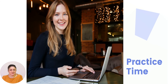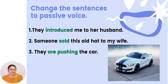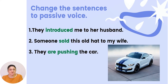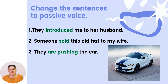Now, if everything was clear, let us practice. Change the sentences to passive voice. One: 'They introduced me to her husband.' Two: 'Someone sold this old hat to my wife.' Three: 'They are pushing the car.' The first sentence contains past simple, the second also contains past simple, and the third contains present continuous — the form of the verb 'to push'. Now identify who or what suffers the action.